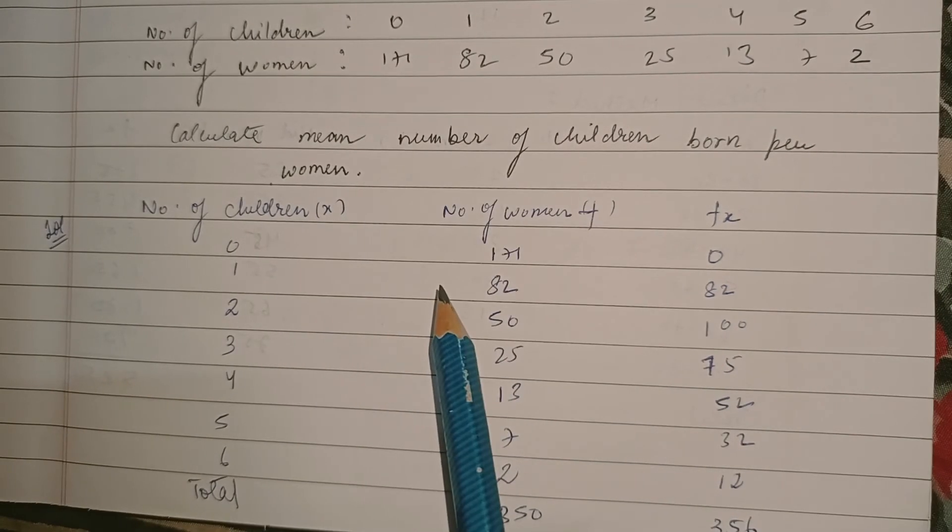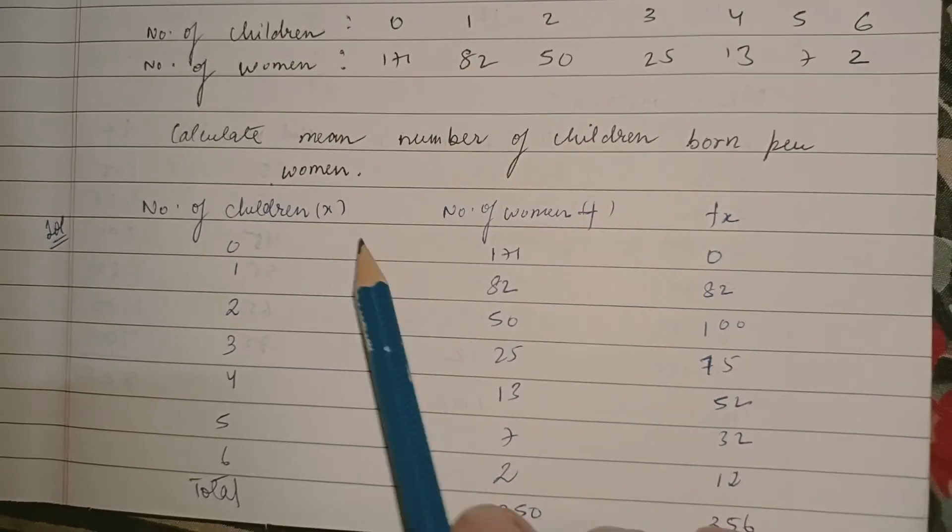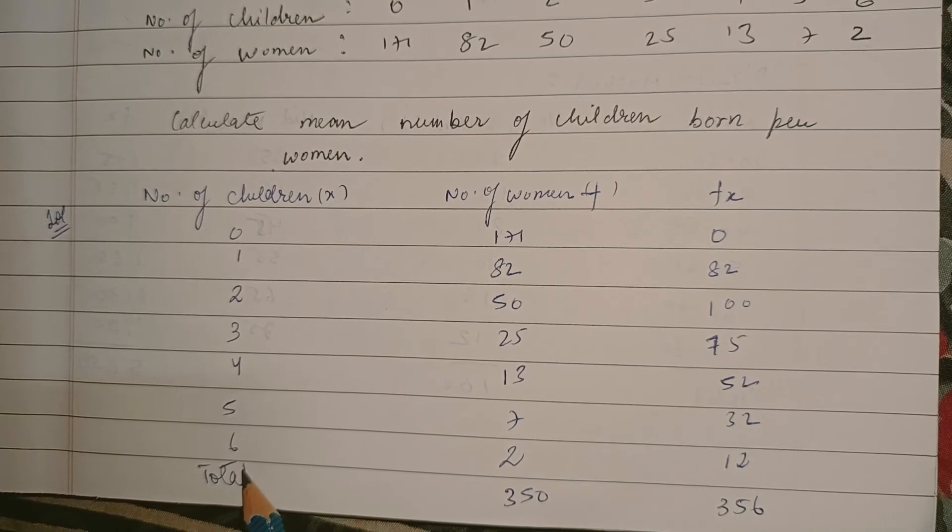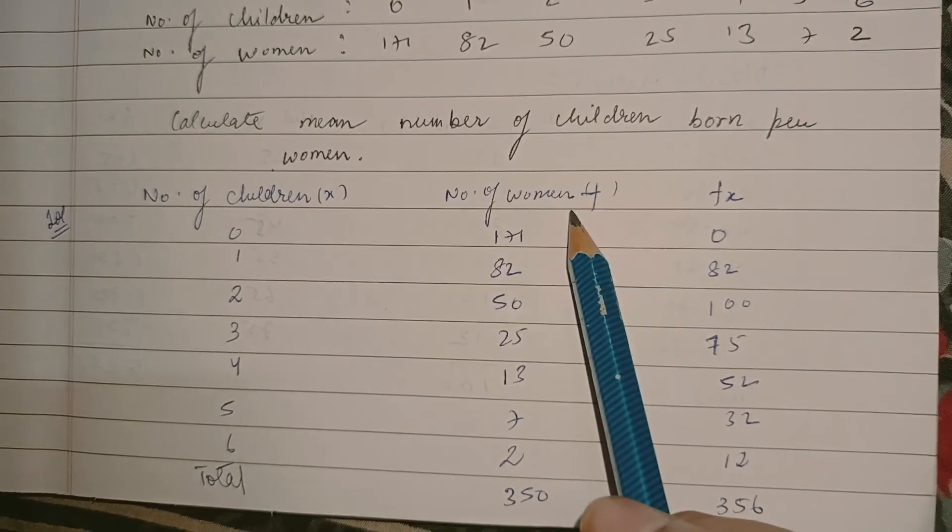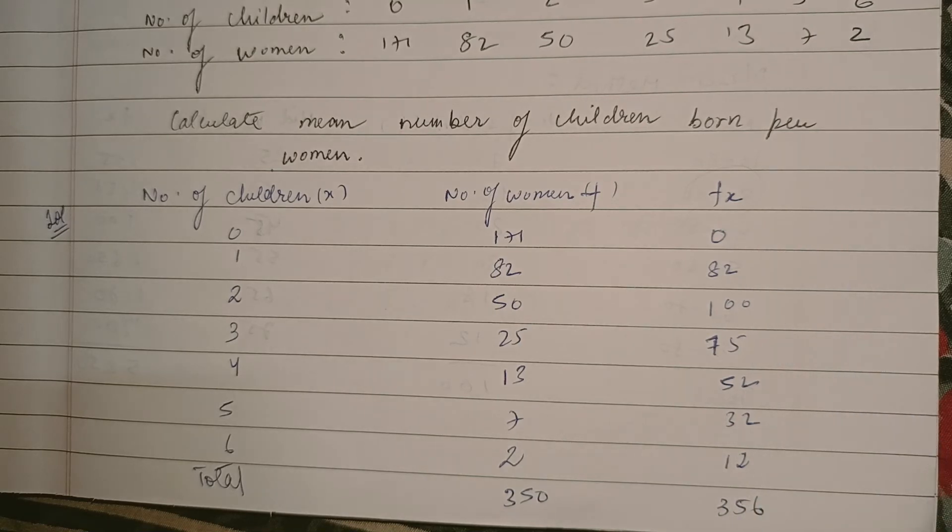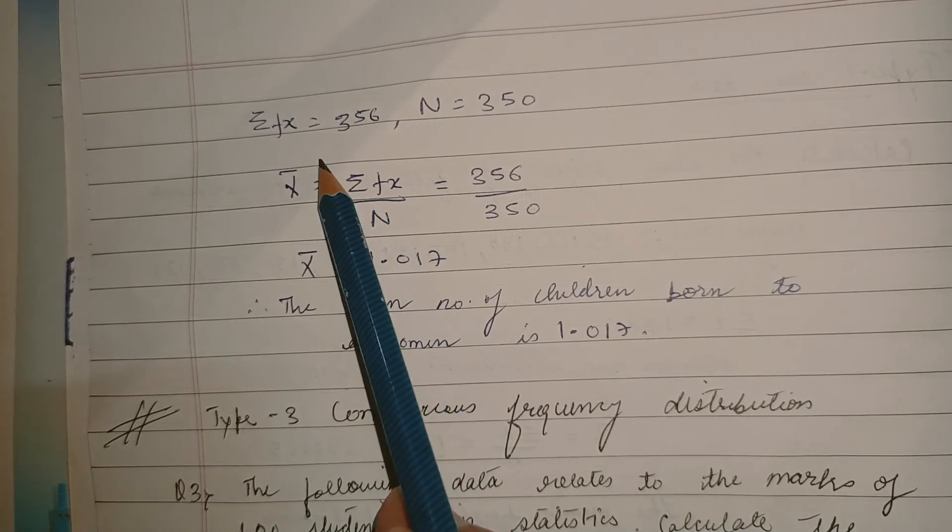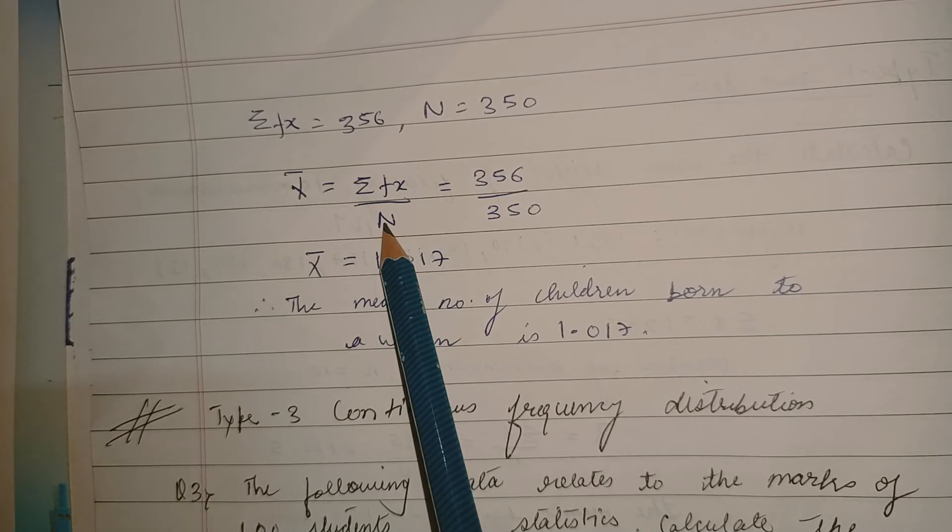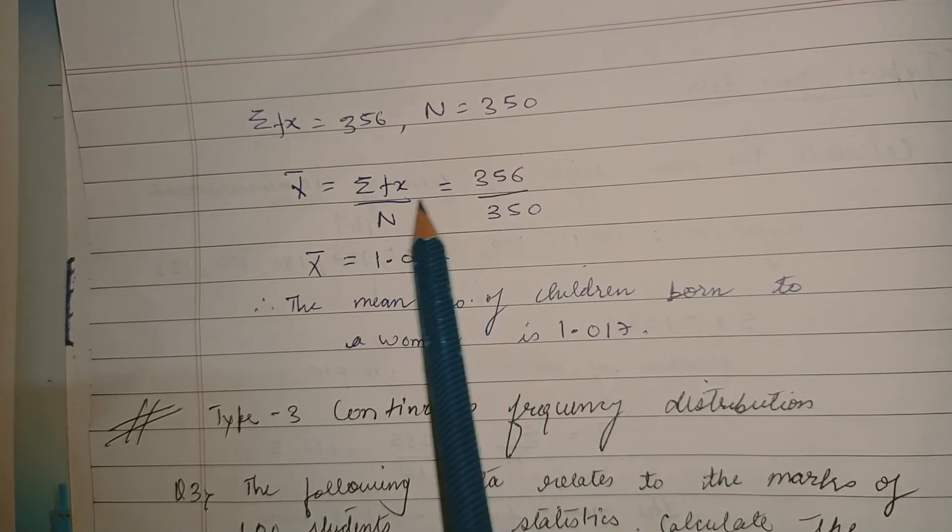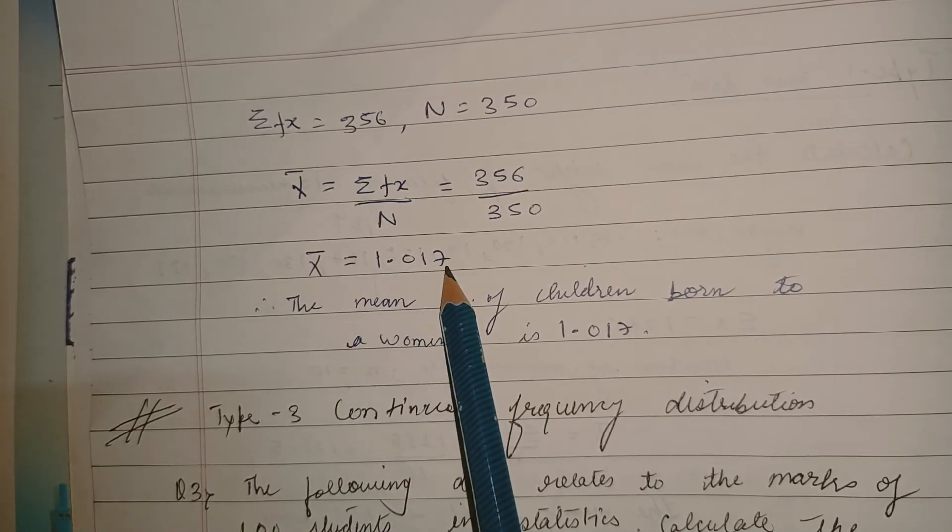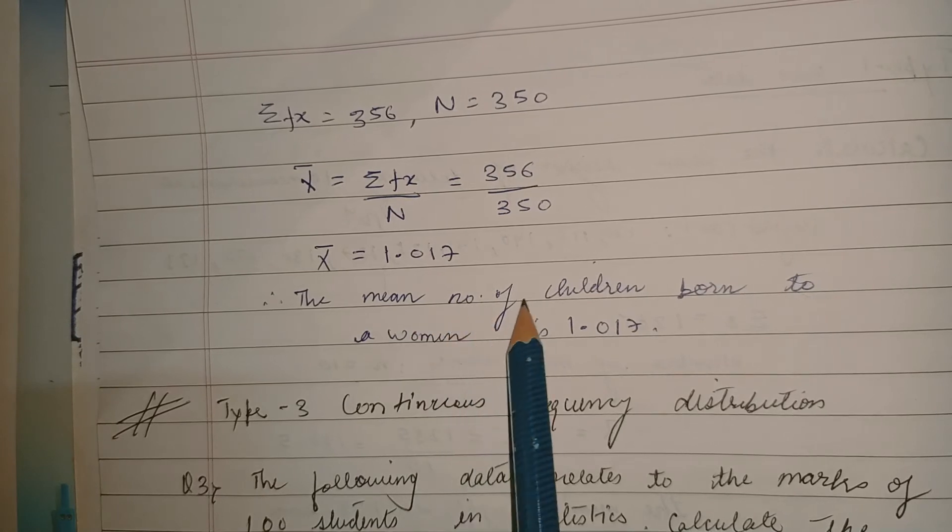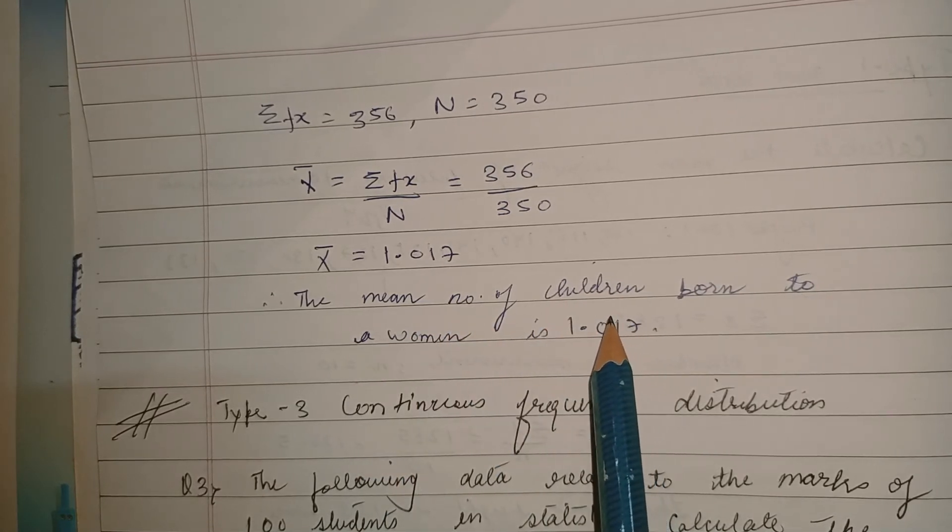Then what we need to do is find the product of fx, like 0 into 171 equals 0, 1 into 82 equals 82 and so on. At last write total of the frequencies, the number of women, that would be 350, and the summation of fx, the products, that would be 356. According to the formula arithmetic mean equals summation of fx by N, so 356 by 350 would be 1.017. Always write a conclusion at last. Here the conclusion is the mean of number of children born to a woman is 1.017.